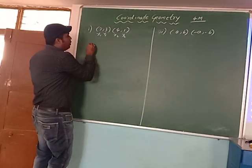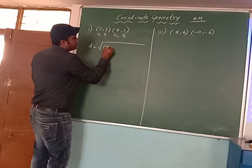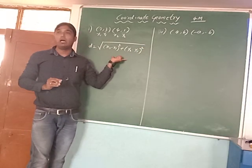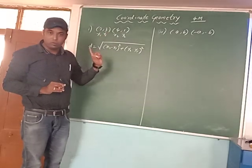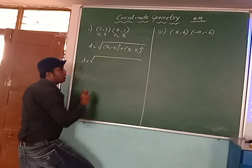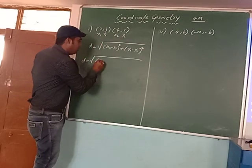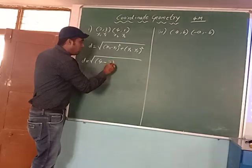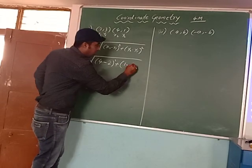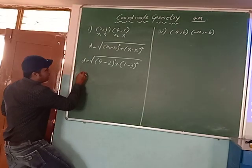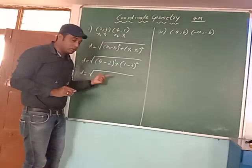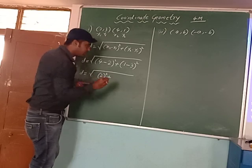Write down the distance formula: D is equal to square root of (X2 minus X1) whole square plus (Y2 minus Y1) whole square. This is the distance formula to find the distance between a coordinate pair of points. Once you write this, we have to proceed further. D is equal to square root of — X2 is nothing but 4, minus X1 which is 2, whole square, plus Y2 is 1, minus Y1 which is 3, whole square. Never forget to write under the square root — the total problem is under square root.